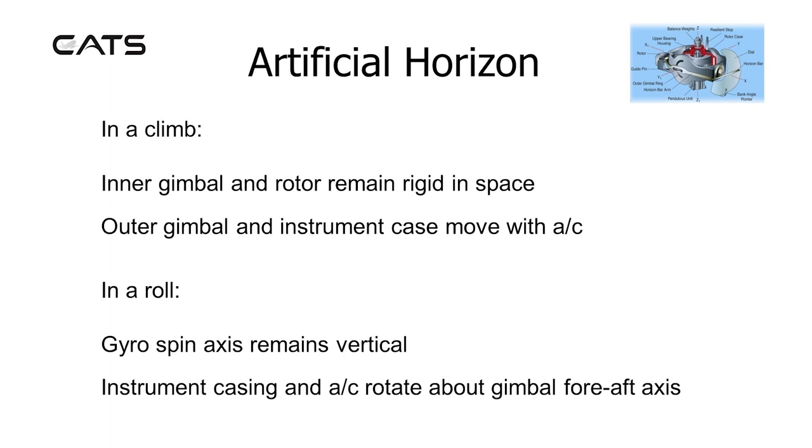In a roll, the gyro spin axis remains vertical. The instrument casing and aircraft rotate about the gimbal fore-aft axis.